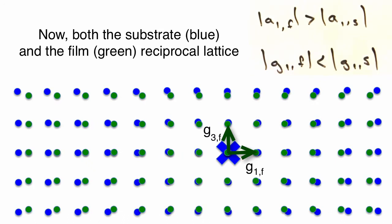So as we move out in reciprocal space, we see the spacing between the film and the substrate lattice points get bigger.